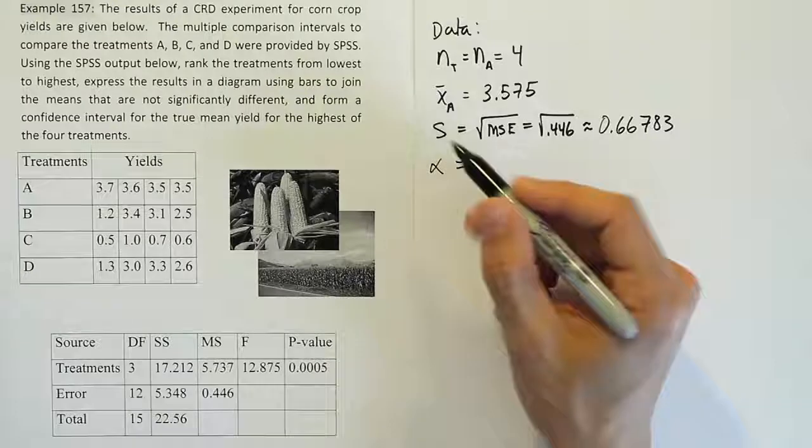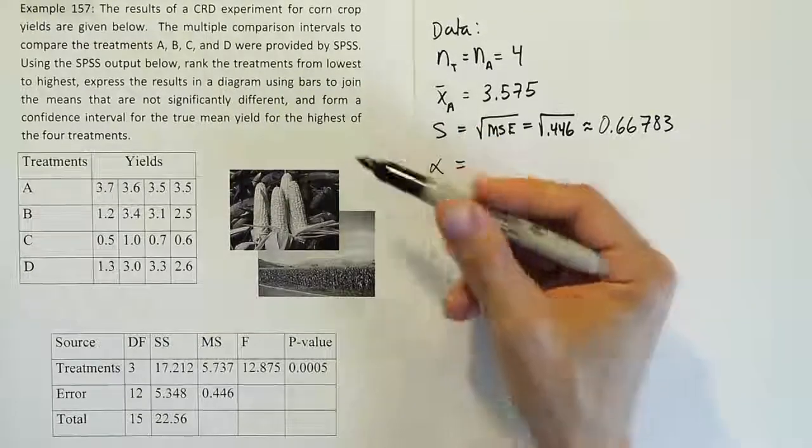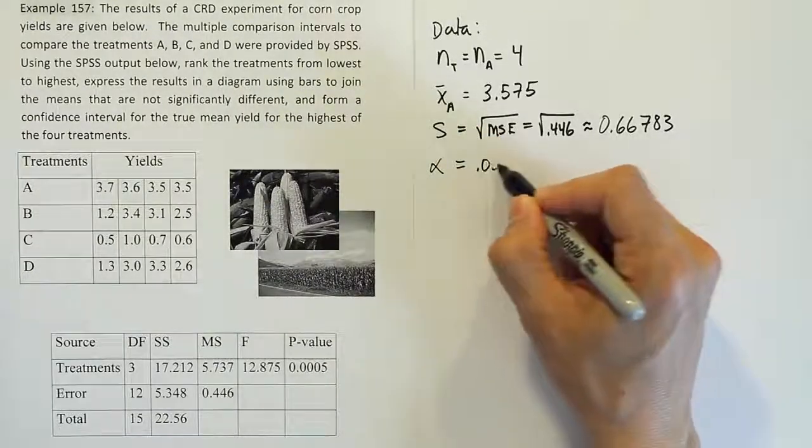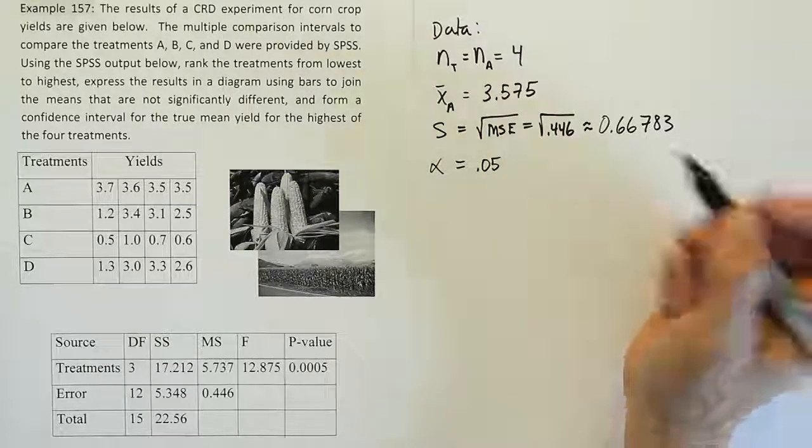Now we need an alpha. It doesn't say what alpha to use in the problem, so we'll use a default 5%. That's kind of the classic alpha level.